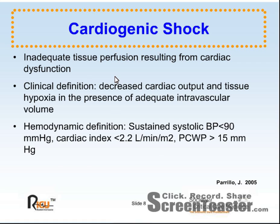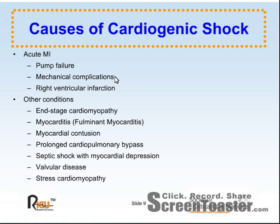The most common causes of cardiogenic shock are left ventricular failure due to massive myocardial infarction. Mechanical complications of acute MI include acute severe mitral regurgitation due to papillary muscle rupture, ventricular septal rupture, and cardiac free wall rupture. Right ventricular infarction complicating acute inferior wall infarction often leads to cardiogenic shock. Other causes include end-stage cardiomyopathy, fulminant myocarditis, and transient apical ballooning syndrome, or stress cardiomyopathy.